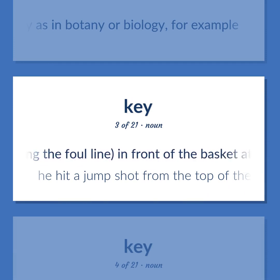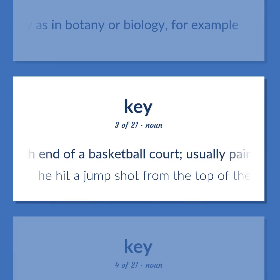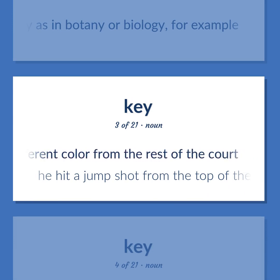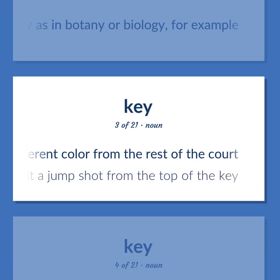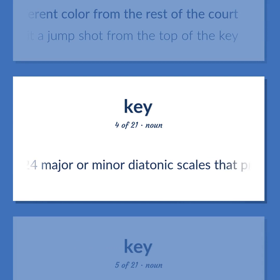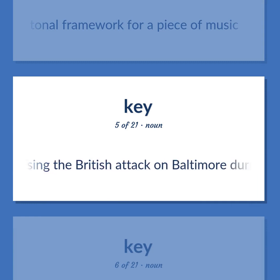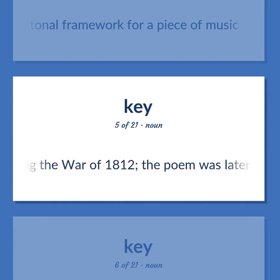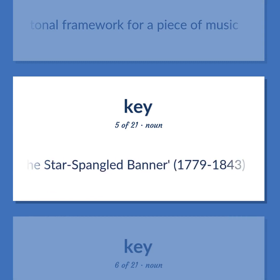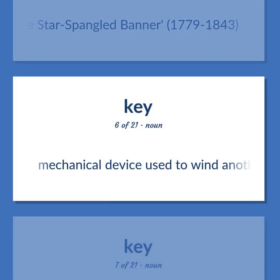Key — Basketball: A space, including the foul line, in front of the basket at each end of a basketball court, usually painted a different color from the rest of the court — 'He hit a jump shot from the top of the key.' Music: Any of 24 major or minor diatonic scales that provide the tonal framework for a piece of music. Francis Scott Key: United States lawyer and poet who wrote a poem after witnessing the British attack on Baltimore during the War of 1812; the poem was later set to music and entitled 'The Star Spangled Banner' (1779–1843).